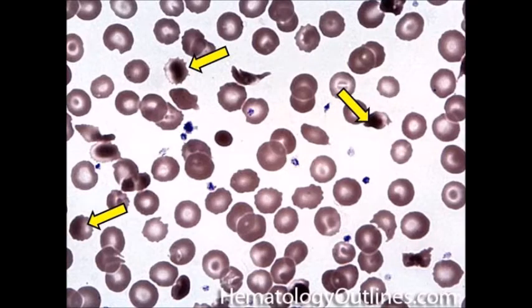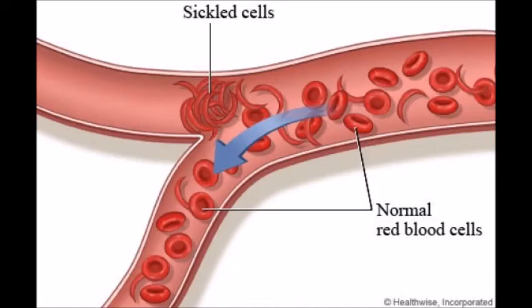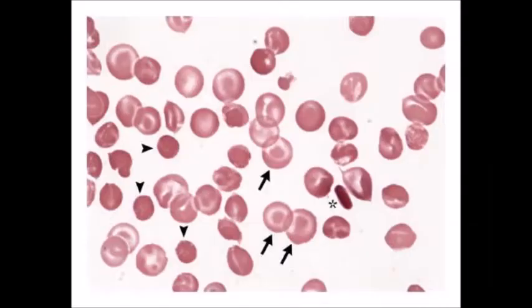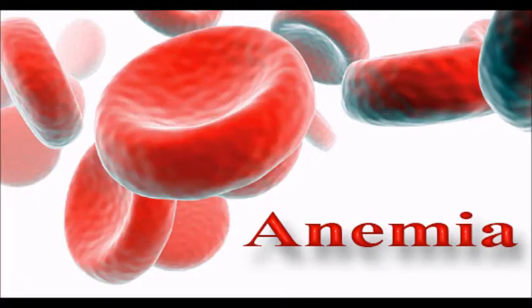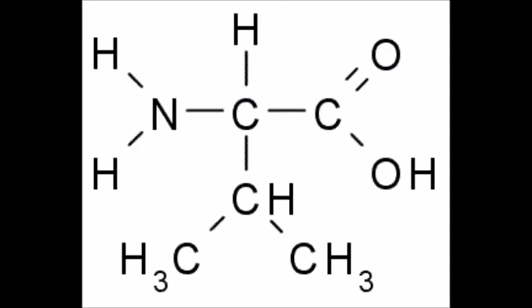There is no universal cure for sickle cell disease. Normal blood cells contain hemoglobin A. Hemoglobin S and hemoglobin C are the abnormal hemoglobin in the body. Patients with hemoglobin C trait are phenotypically normal with no clinically evident limitations or symptoms. While those with hemoglobin C disease may have a mild degree of hemolytic anemia, splenomegaly, and borderline anemia, although the clinical complications of hemoglobin C disease are not severe.